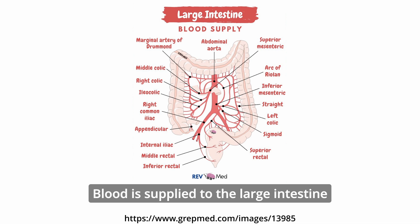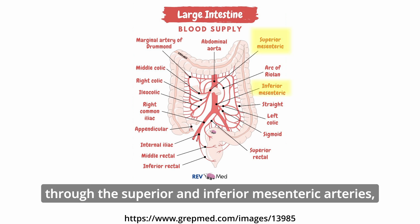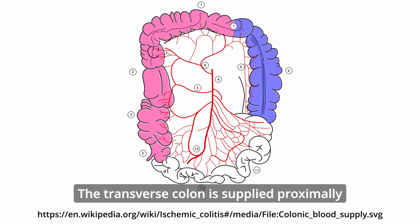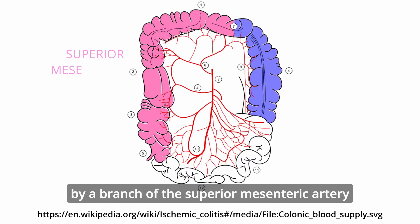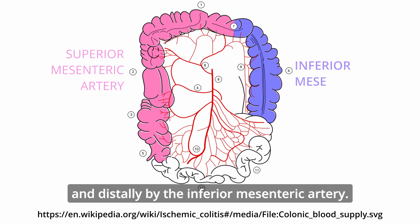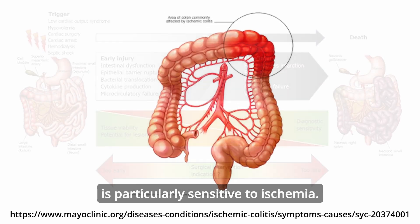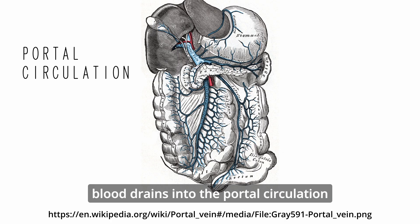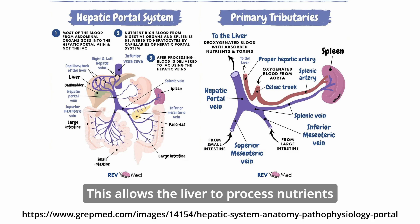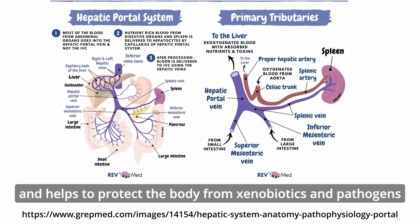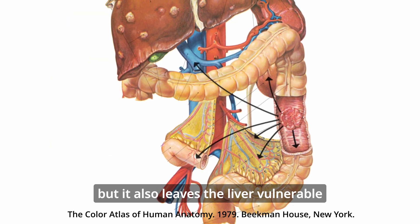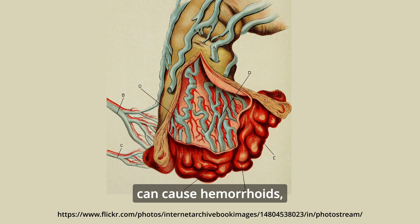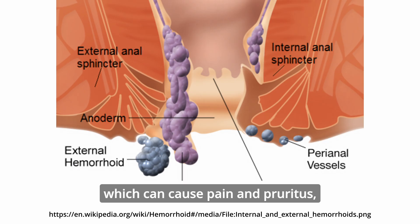Blood is supplied to the large intestine through the superior and inferior mesenteric arteries, which anastomose via the marginal artery of the colon. The transverse colon is supplied proximally by a branch of the superior mesenteric artery and distally by the inferior mesenteric artery, and the marginal region in between is particularly sensitive to ischemia. Blood drains into the portal circulation and passes through the liver, allowing it to process nutrients and protect against xenobiotics and pathogens, but also leaving the liver vulnerable as a site of metastasis. Disruption of the superior venous plexuses in the anus can cause hemorrhoids, causing pain, pruritus, and bleeding.